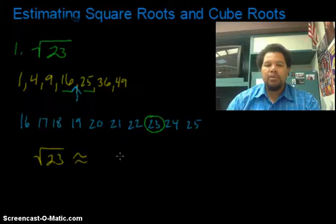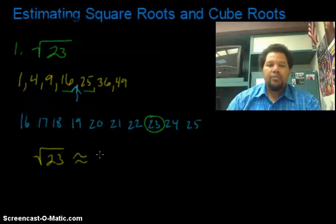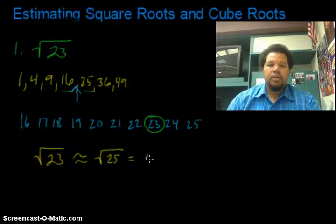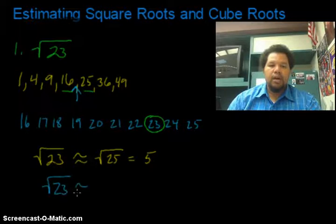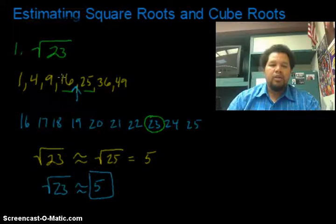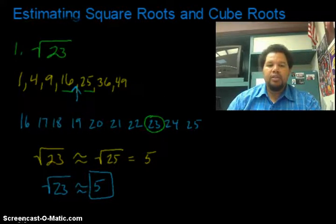about the same as the square root of 25, which is 5. So in other words, I'm going to say the square root of 23 is about 5. And this will be our answer right here. So all this right here is kind of my thinking process that helps me get to this answer.